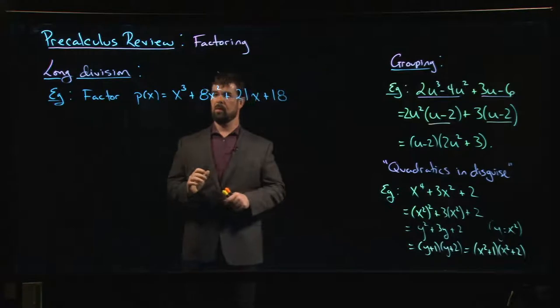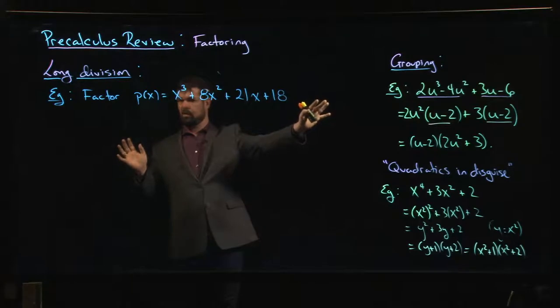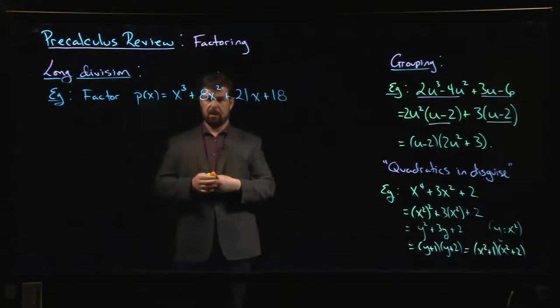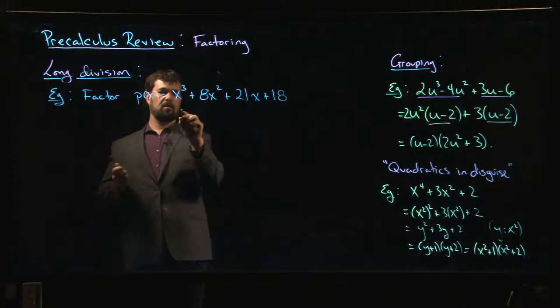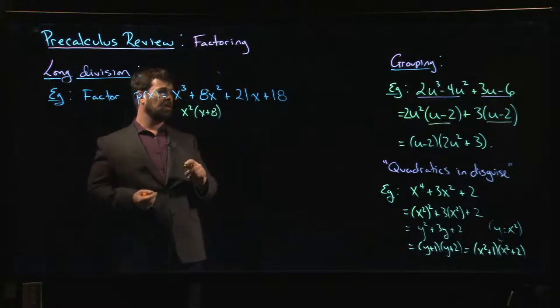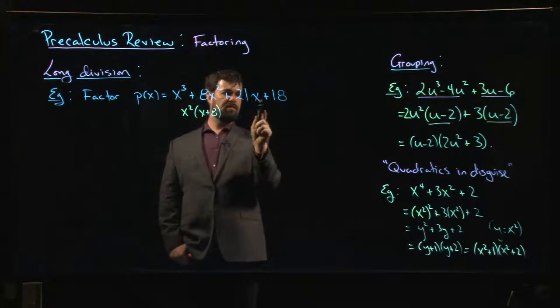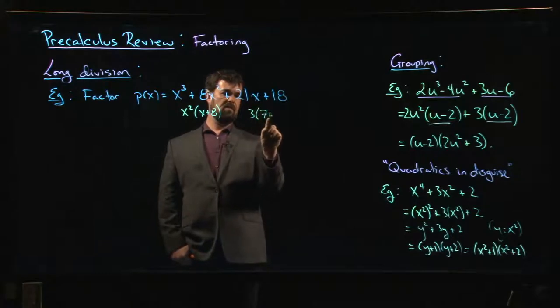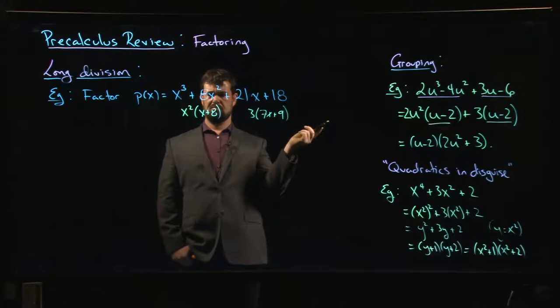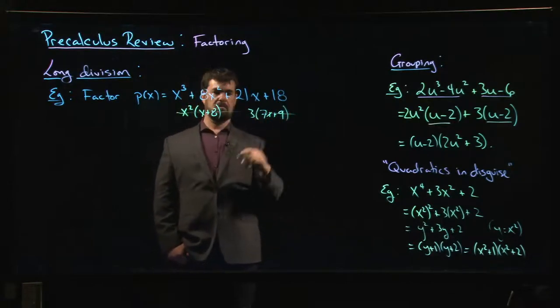So here's a cubic polynomial that we might want to try to factor. You might say, hey, grouping is pretty easy. Let's see what we can get away with if we do grouping. But you'll notice right away that grouping is going to fail in this case. If I take out an x squared, I'm left with an x plus 8. Over here, best I can do is a 3, and I'm left with 7x plus 9. It's not going to work. So grouping is not an option.